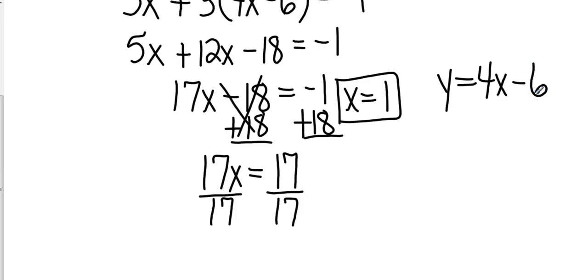And I'm going to plug in that 1 everywhere I see an x. So that's going to be y equals 4 times 1 minus 6. 4 times 1 is 4 and 4 minus 6 is going to be negative 2.